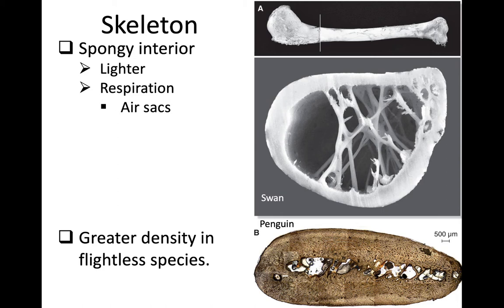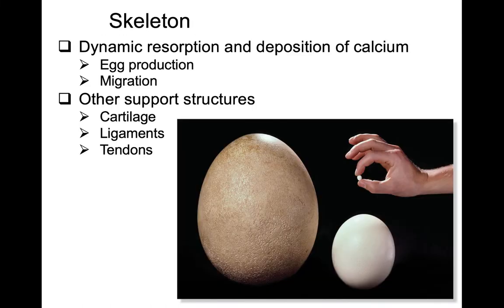Birds that are flightless have evolved greater density in their bones, as you can see in this penguin here. It's not completely filled in because they still need that extension of the air sacs into these bones. The skeleton of birds is actually quite a dynamic series of structures, where there's constant resorption and deposition of calcium and movement of calcium to different parts of the body as needed.